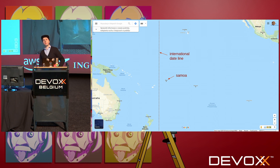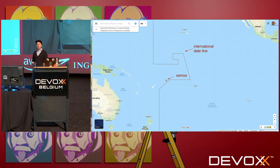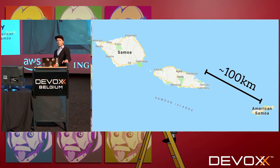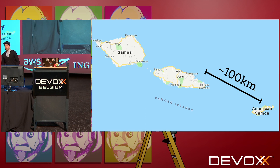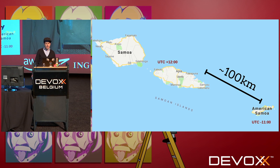They decided to change time zones, because UTC−11 didn't work for them. So on 29th of December 2011, Samoa Island decided to skip the date — from 29th of December they went straight to 31st of December. Because why not? But 100 kilometers away from Samoa Island there was American Samoa, an American territory like Hawaii. They didn't want to change time zones. So now within 100 kilometers we have UTC+12 and UTC−11. Because why not? Different countries, doing business with different people — it makes perfect sense.